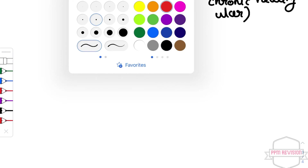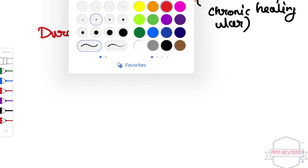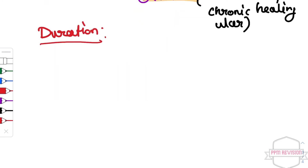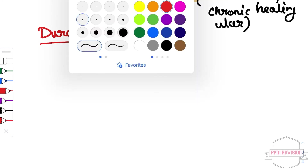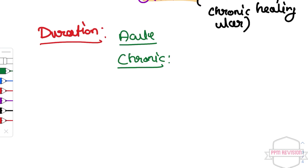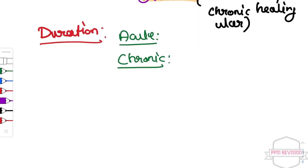Now classifying based on duration: an ulcer can be acute or chronic. In acute, the duration is less than two weeks, whereas in chronic it is greater than two weeks.